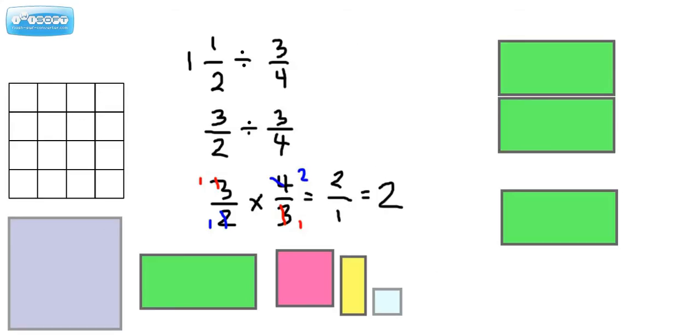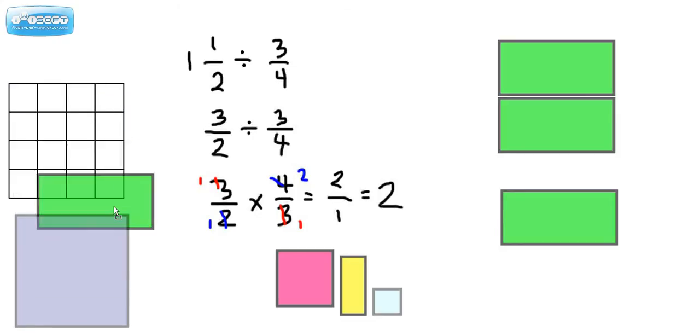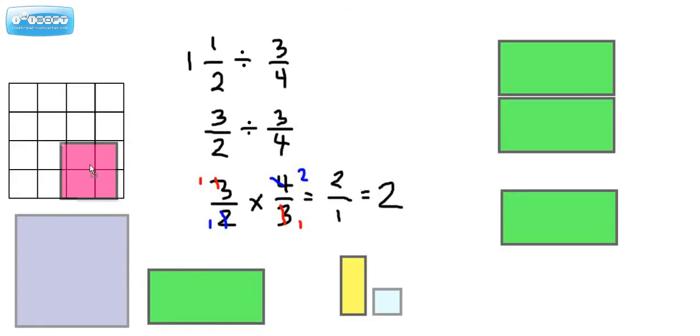First of all, let's make sure we understand the little fractional pieces that we have down here. Now this right here is one square, and you can see that this can be broken up in a lot of different ways. We can break it up into halves, we can break it up into quarters, we can break it up into eighths, or we can break it up even into sixteenths.